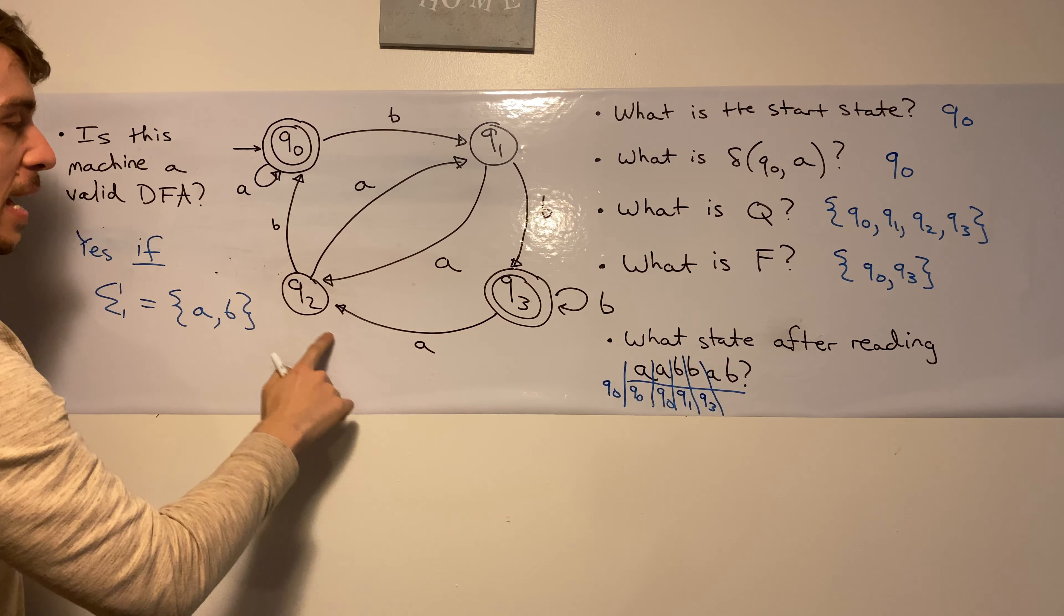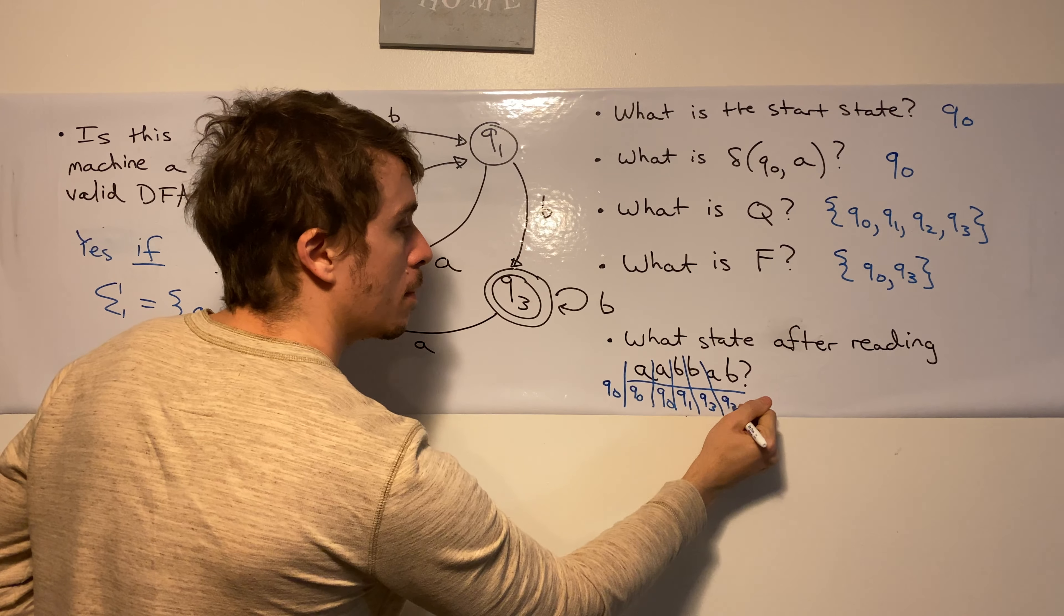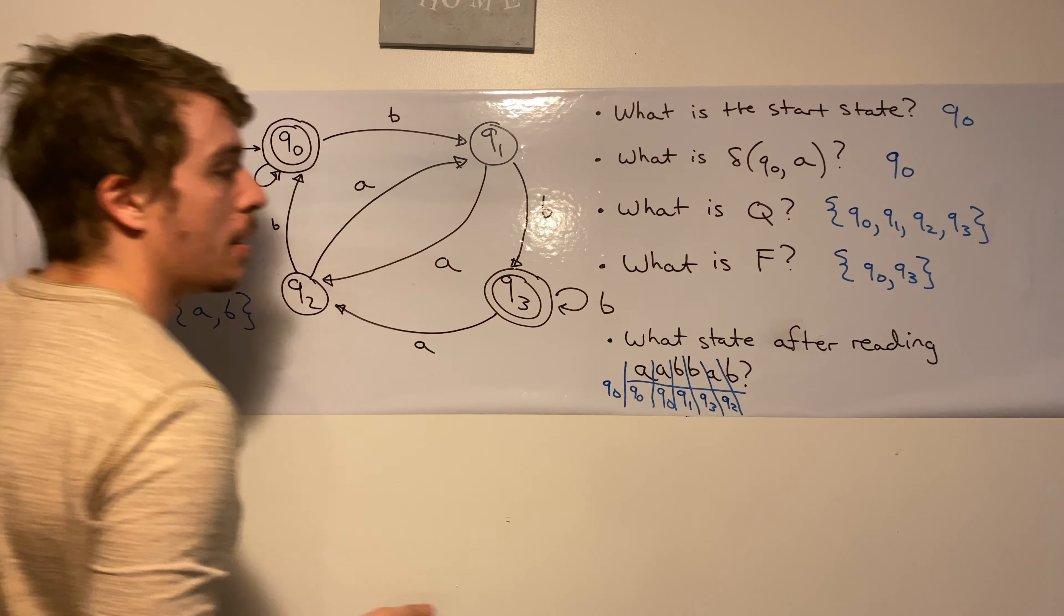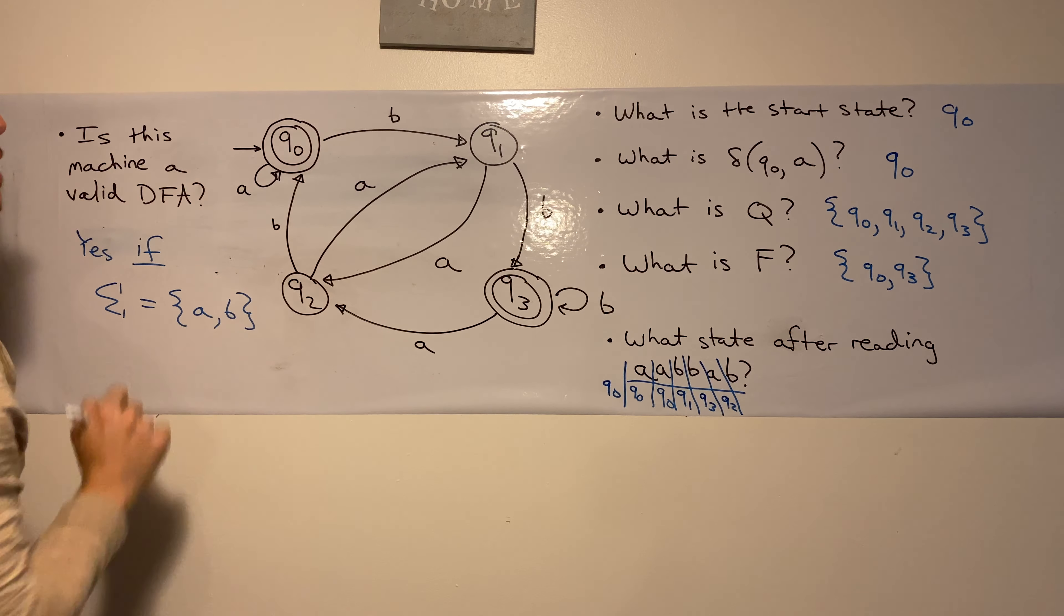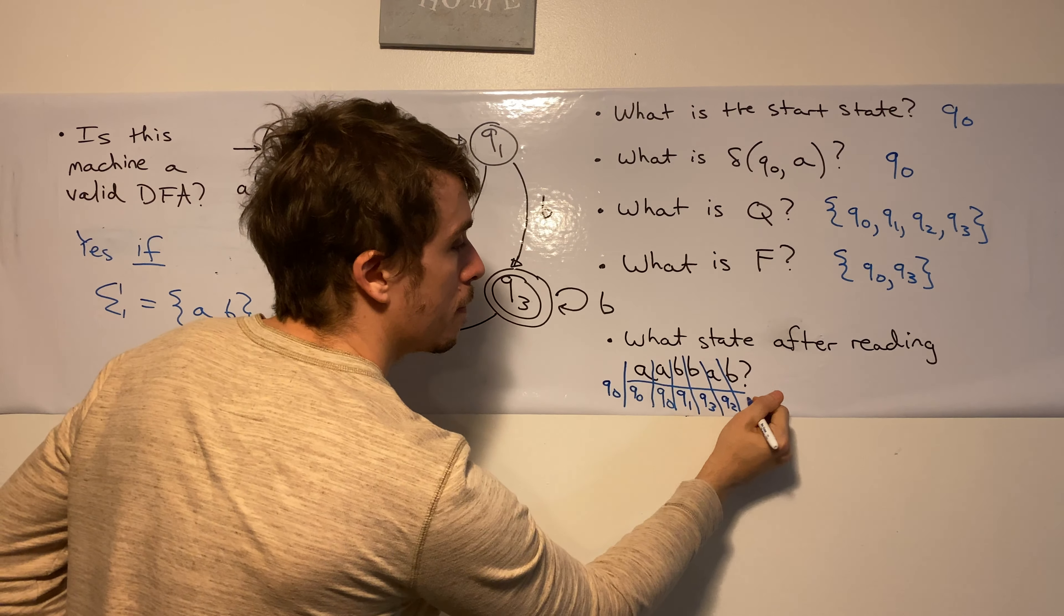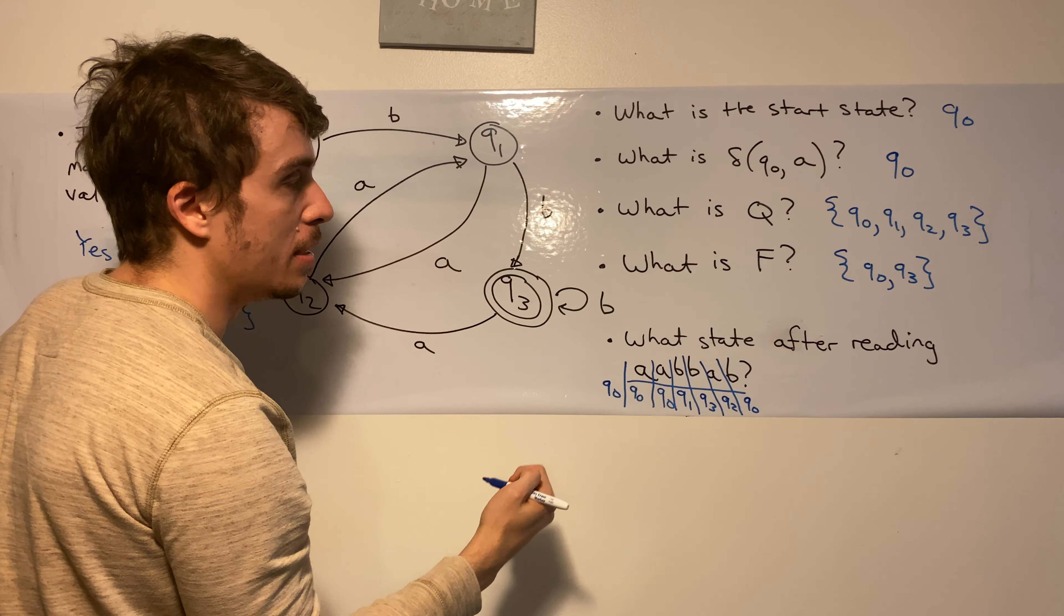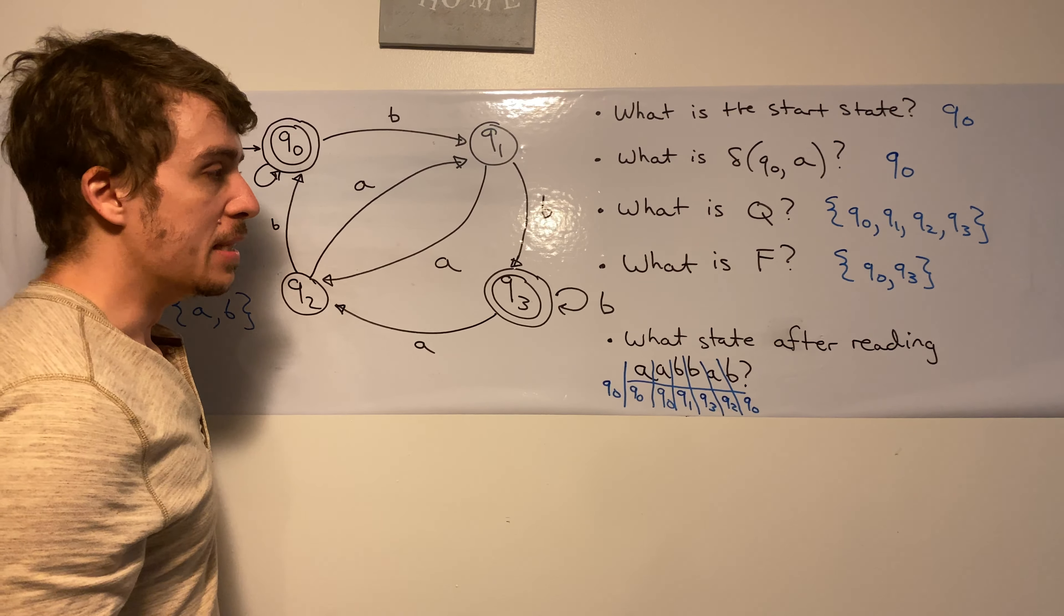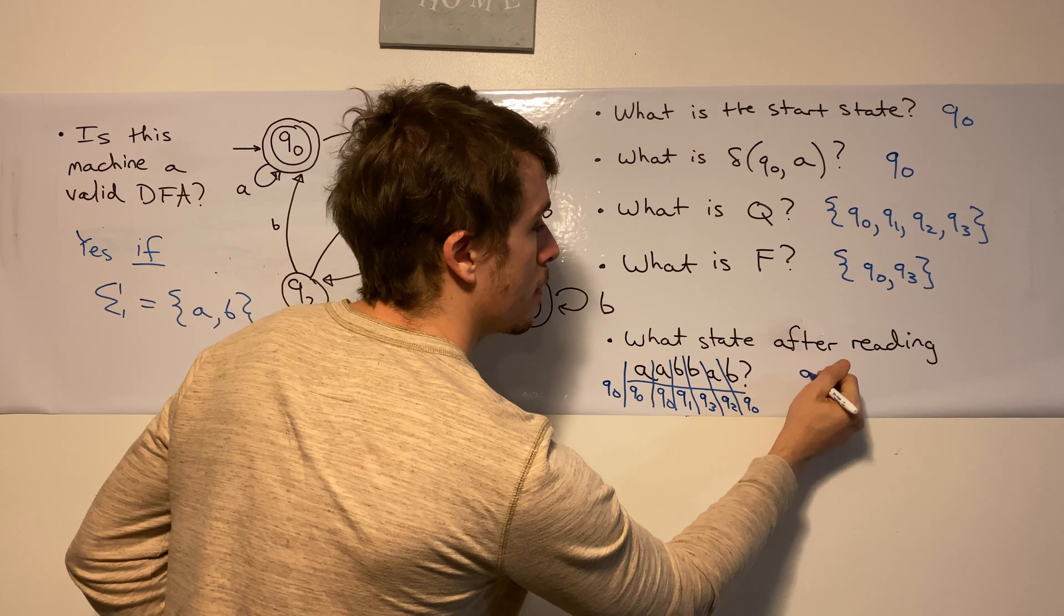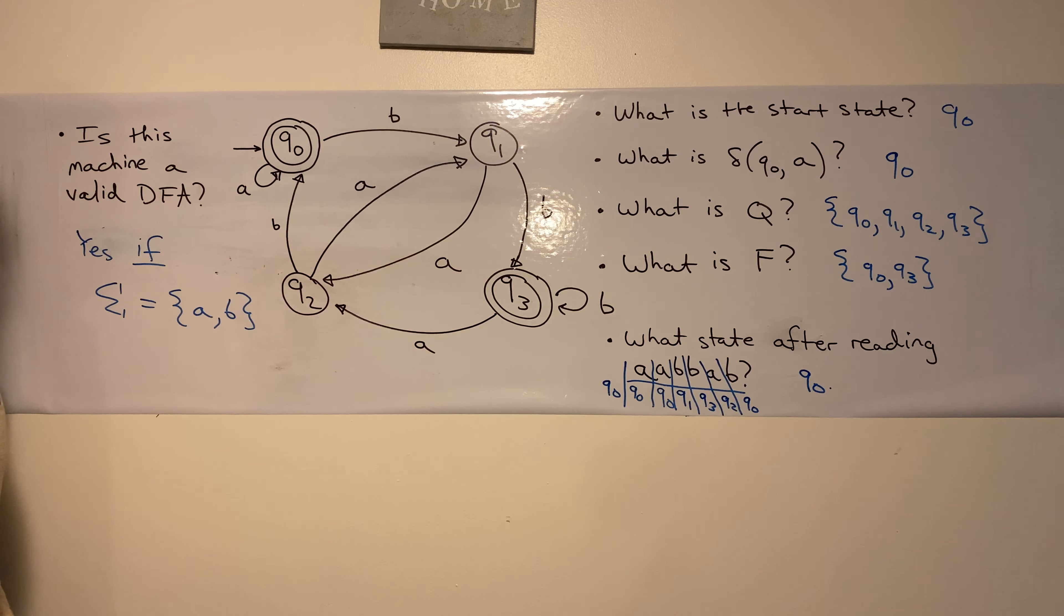Q3 reading an A takes us over to Q2. And finally, Q2 reading a B takes us back to Q0. And since the input is now exhausted, the final state that we are in is Q0. And those are some basic questions about this DFA.